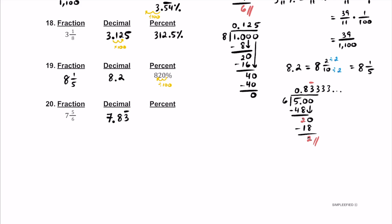Now if you want to turn this into a percent, let's multiply this decimal by 100. If we do that, this is going to be 783.3 repeater percent — don't forget those 3s go on forever. And hopefully you can also remember that 3 repeater is equal to 1 third. So that's going to be 783 and 1 third percent. For each of these repeaters, it's good to know both versions.